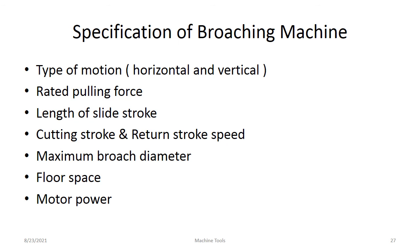The specifications of the broaching machine include: type of motion — whether vertical or horizontal; rated pulling force — how much force will be acting on the workpiece; length of the sliding stroke — up to 120 inches for horizontal machines; cutting stroke speed and return stroke speed; maximum broach diameter; floor area required — horizontal broaching machines require more floor area compared to vertical broaching machines; and motor capacity. These are the seven important specifications of the broaching machine.